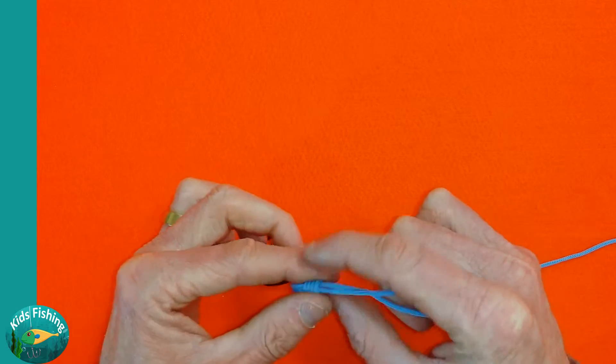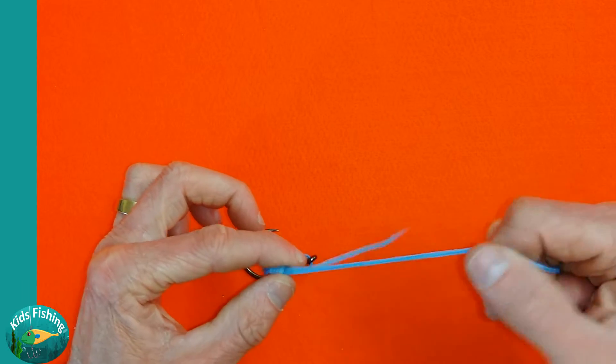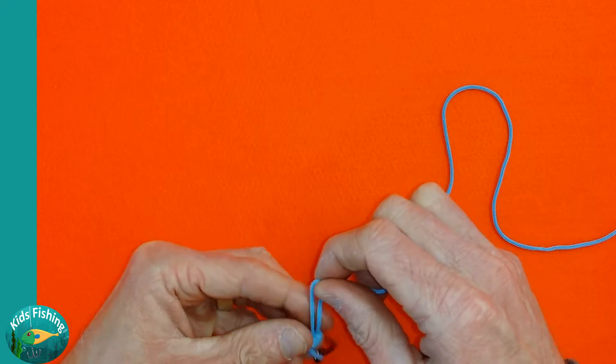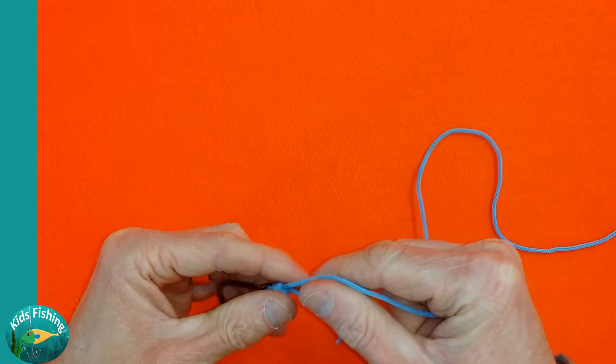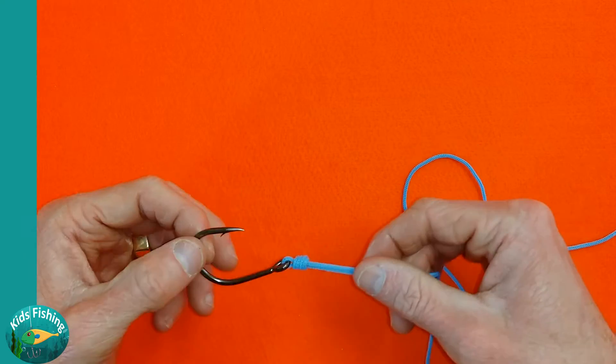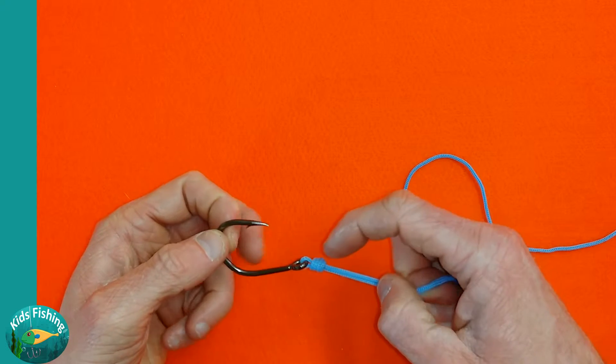Alternatively, if you don't want the loop there and you just want to cinch it down, it's a matter of sliding the knot down to the hook, pulling the tag end tight. And there we have a cinched knot.